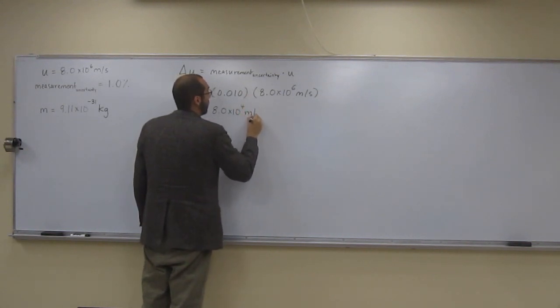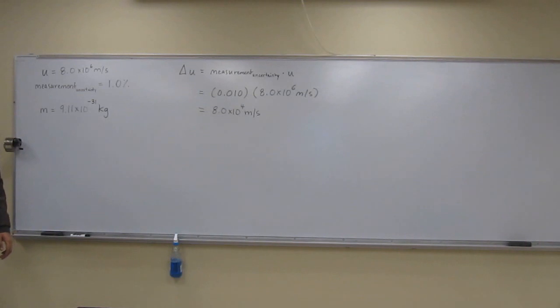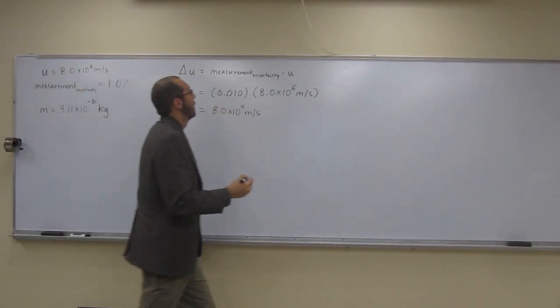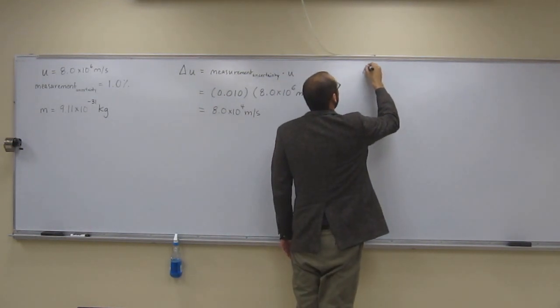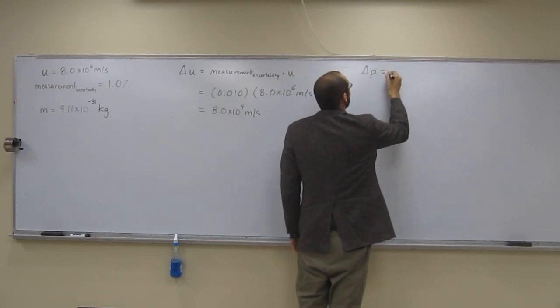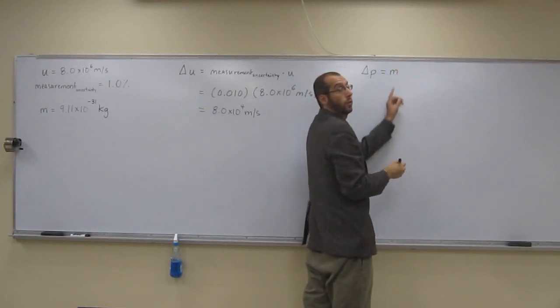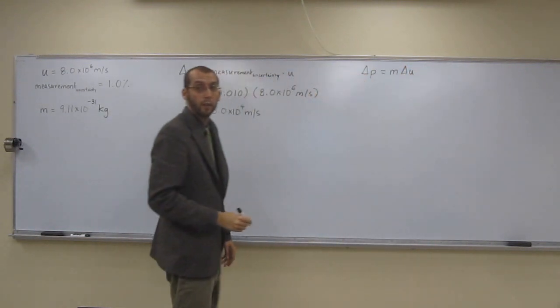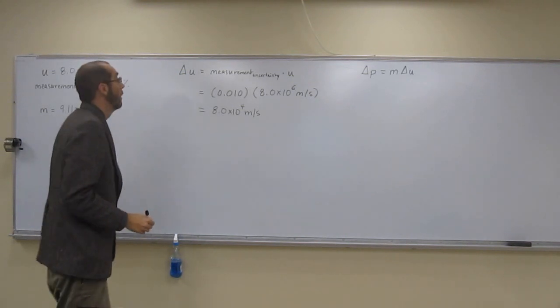So the next thing you want to do is figure out what's the uncertainty in the momentum, because there's a couple more equations that you're going to dump this information into. So the next equation you need to remember is that uncertainty of the momentum equation. So delta P equals the mass of the thing that you're measuring times that uncertainty in the velocity, which you just figured out here.